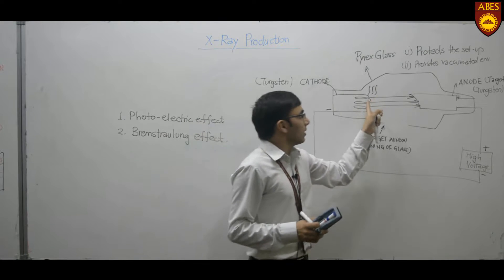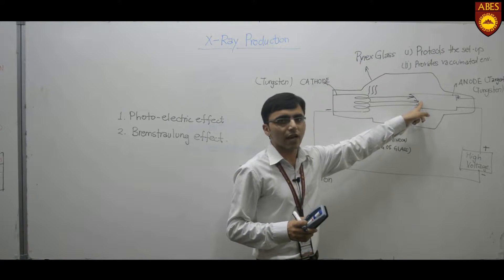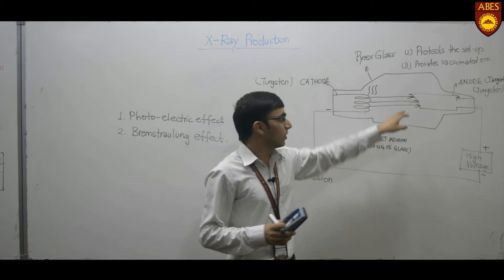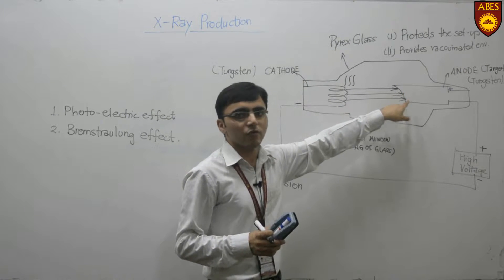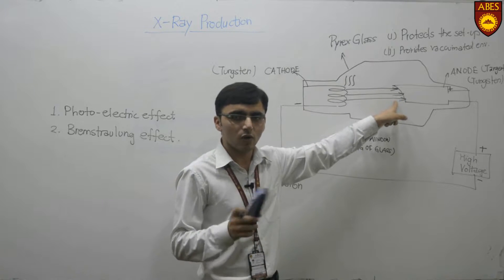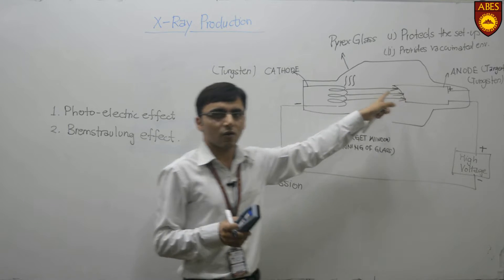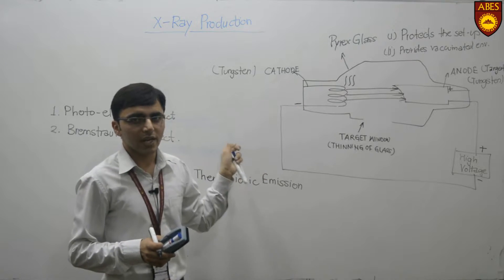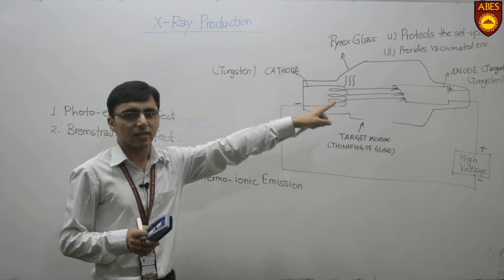Why does the electron get slowed down or stopped? When the electrons from the cathode are moving towards the anode, there will be electrons around the atoms of the anode material, and these electrons will influence the negatively charged electrons approaching towards it, slowing them down. The positive charge of the anode would also help in slowing down or stopping the electrons. These two effects take place when the electrons strike the anode.